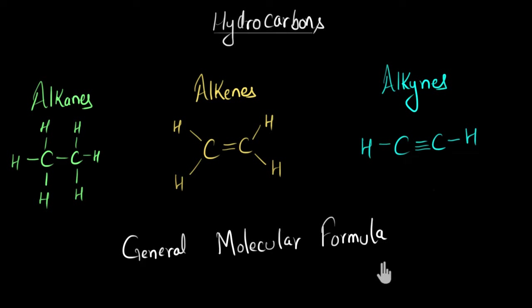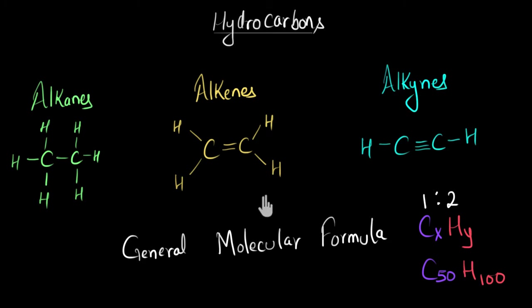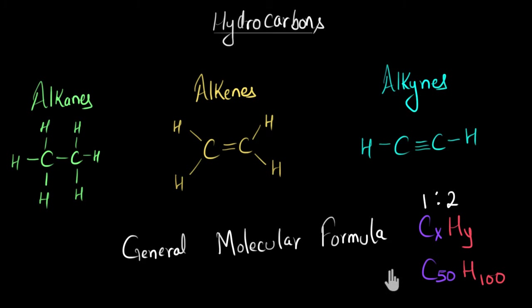A general molecular formula gives a relationship between the number of carbon atoms and the hydrogen atoms in a particular family. For example, in the alkane family, for every carbon atom, you have twice the number of hydrogen atoms — that's the relationship. Now, if you're wondering why this is important: just imagine if in future you discover a new organic compound which has around 50 carbon atoms and 100 hydrogen atoms. Then just by knowing the general molecular formula, you will be able to categorize this compound into one of these families, and with that, you will be able to predict its chemical properties pretty fast. Because all the members of a certain family will have similar chemical properties. So that's why we are going to find out the general molecular formula of each of these families.